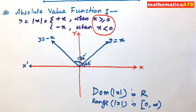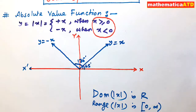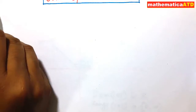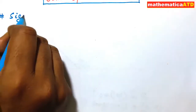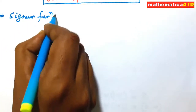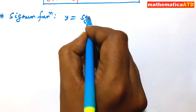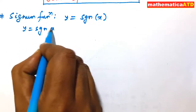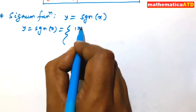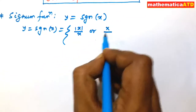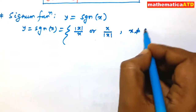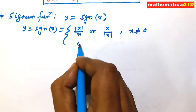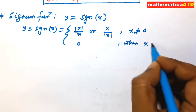Now we shall see the signum function, which is the second special function. The signum function is denoted y = sgn(x). It is defined as y = sgn(x) = |x|/x or x/|x|, only for x ≠ 0, since the denominator cannot be zero. And it equals zero when x = 0.